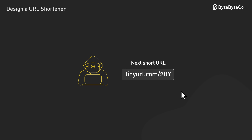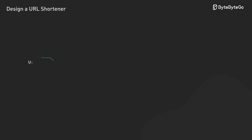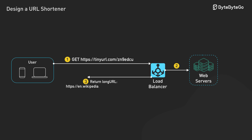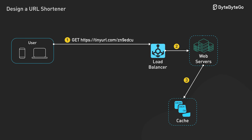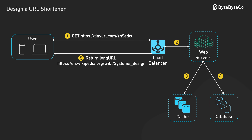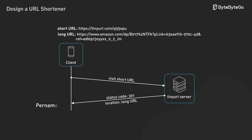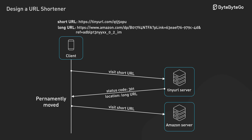Generating the short URL is just half of the problem. The other half is what happens when someone clicks it. The system needs to look up the original URL and redirect you there, and this happens far more often than creating new short URLs, so speed matters. First, check the cache — if the mapping is there, redirect immediately. If not, hit the database, cache the result for next time, then redirect. The redirect itself uses what's called a 301 status code, which tells your browser this URL has permanently moved to the other location. Your browser remembers this, so it might skip the URL shortener entirely next time.